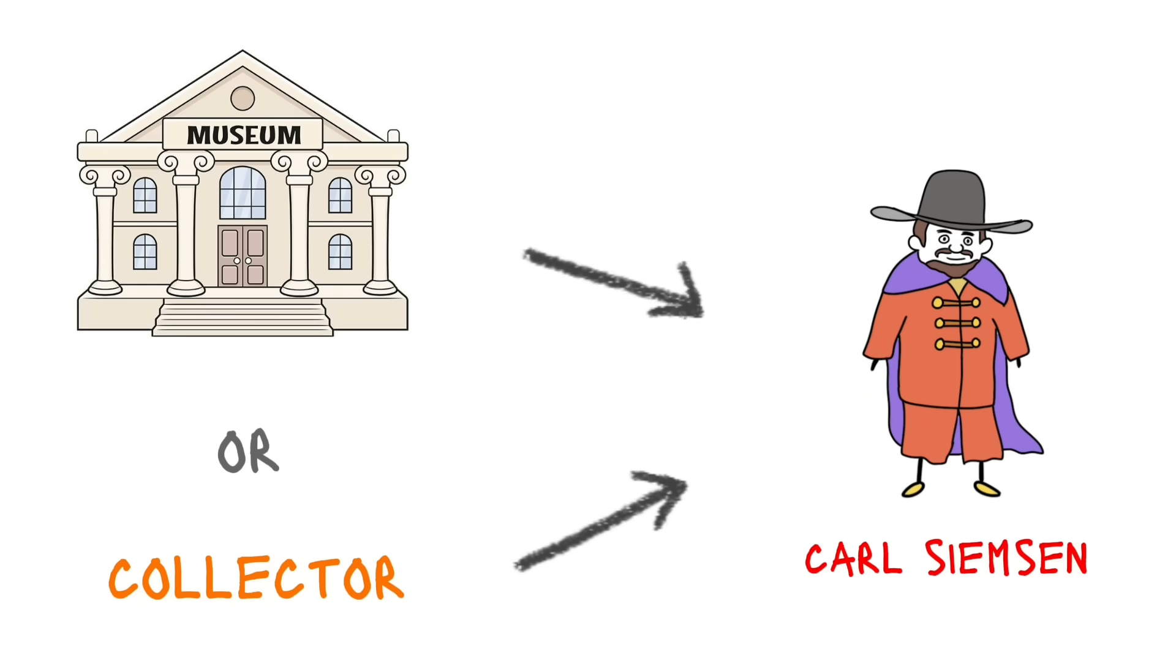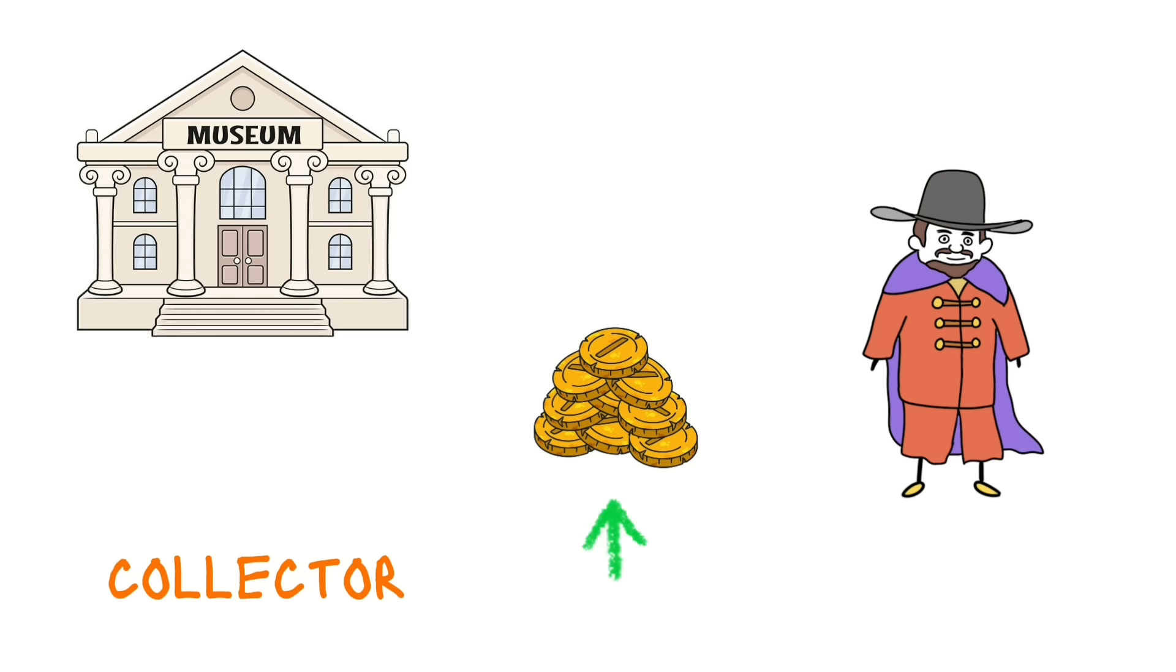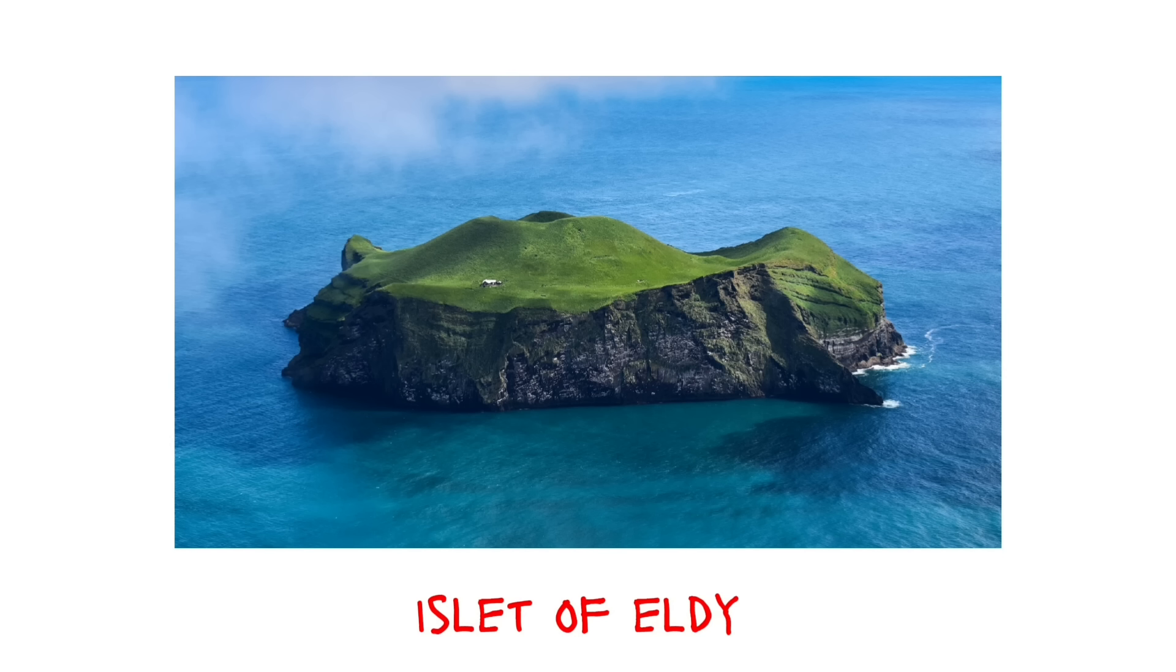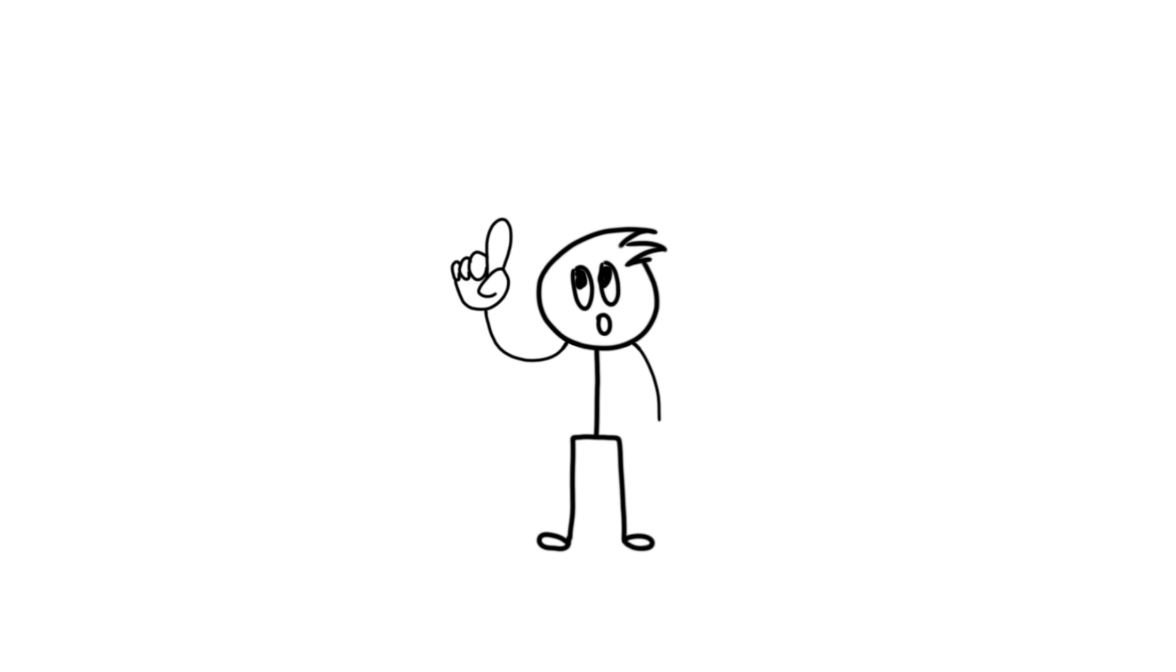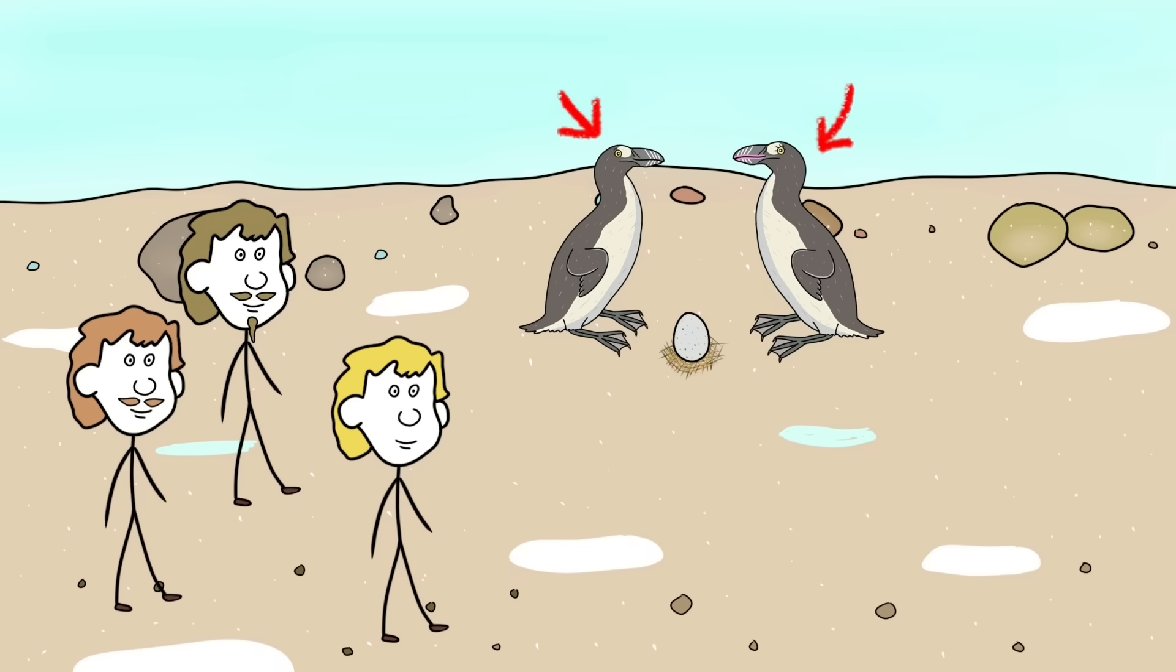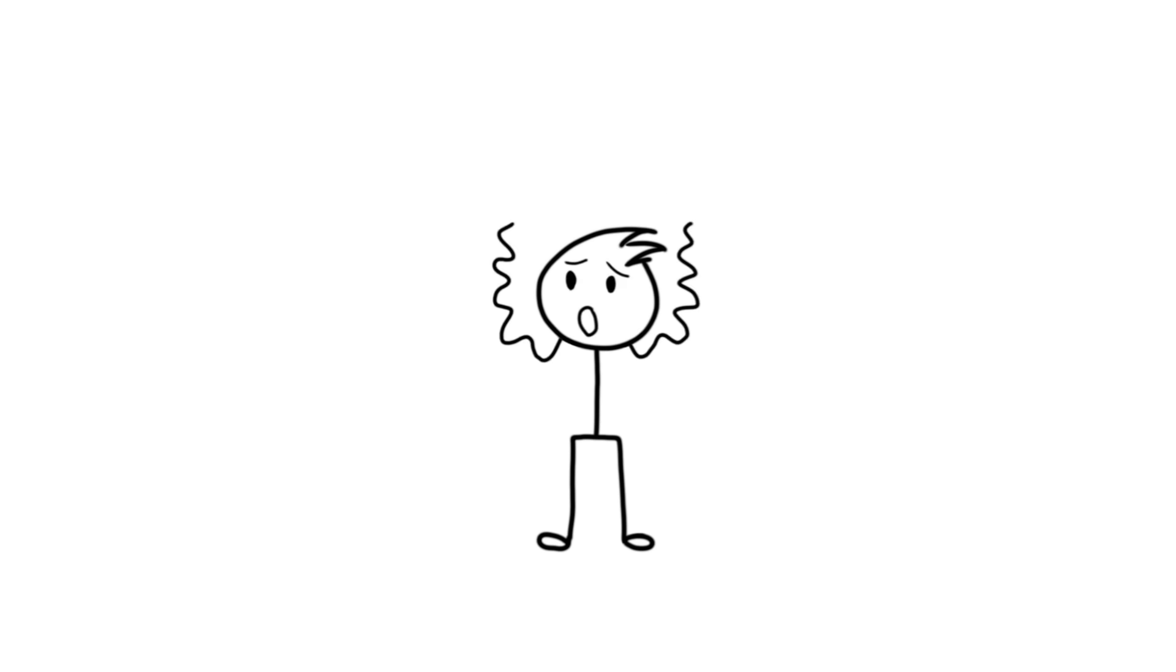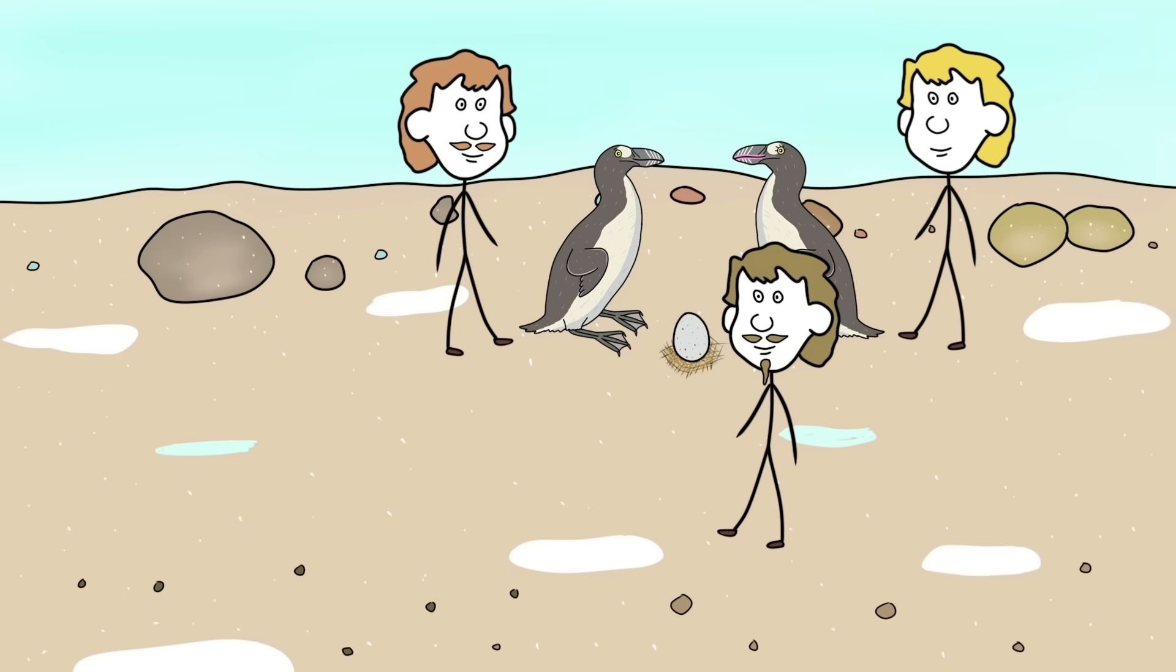So, either a museum or some collector ordered a merchant named Carl Siemsen to get skins of two auks. A heavy amount was offered for that. Siemsen hired three guys for the job. They went to the islet of Eldie for the search. After a long search, they found a couple auks guarding their egg, so the poachers reached them. Since they didn't know humans were bad, they didn't flee from there.